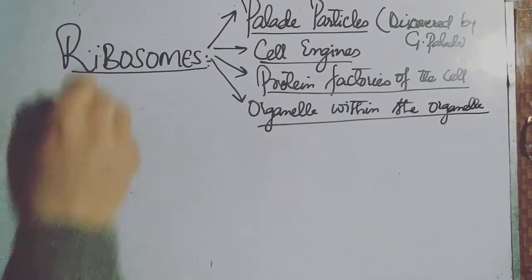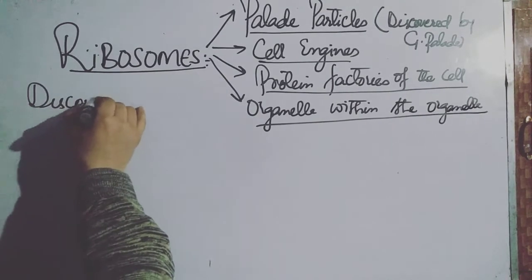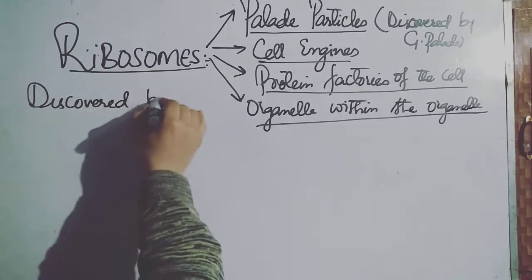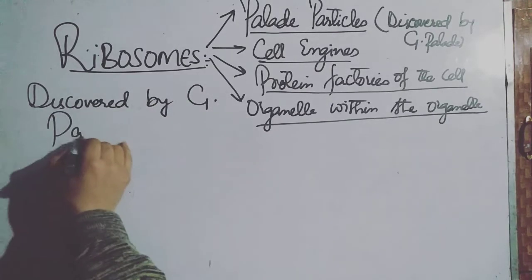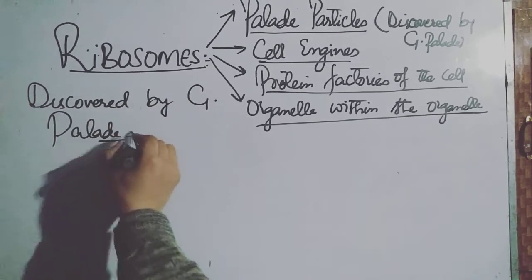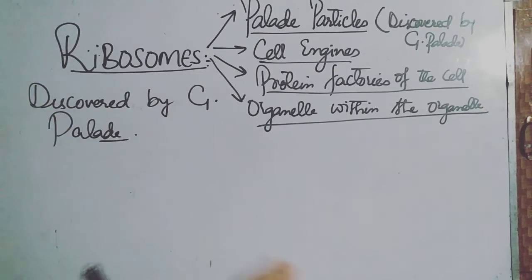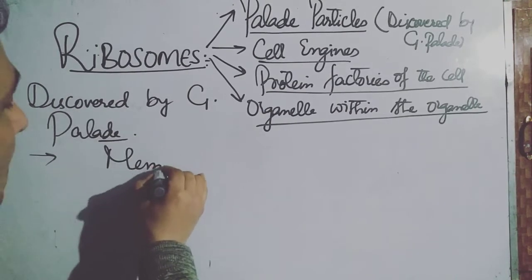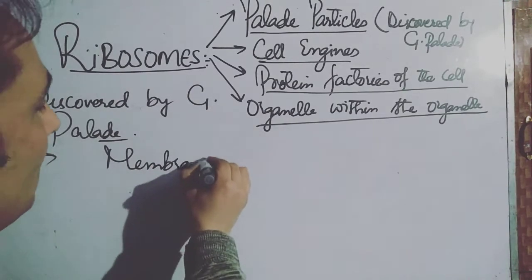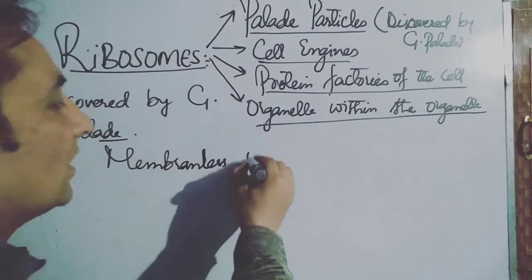Regarding the discovery, ribosomes were discovered by George Palade — that's why they are also known as Palade particles or Palade granules. Now moving further, ribosomes are membrane-less cell organelles, meaning they have no membrane.